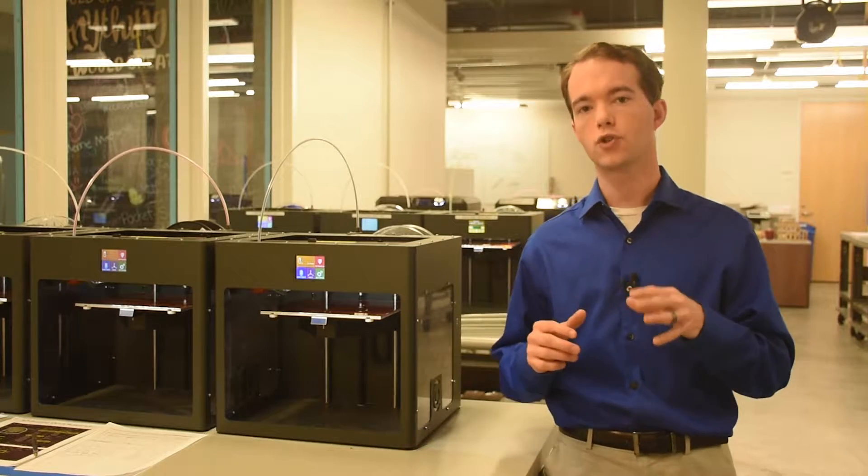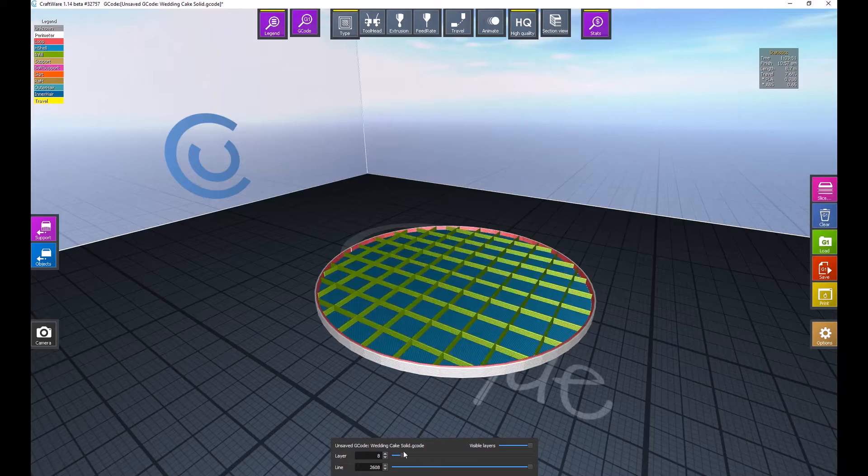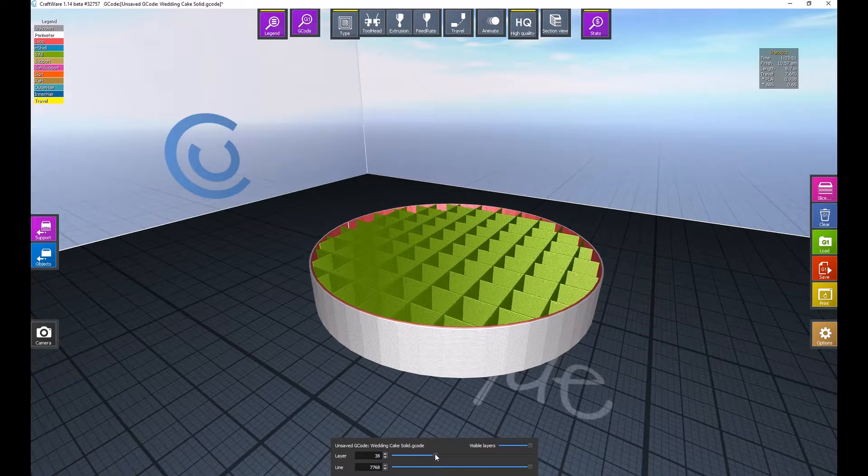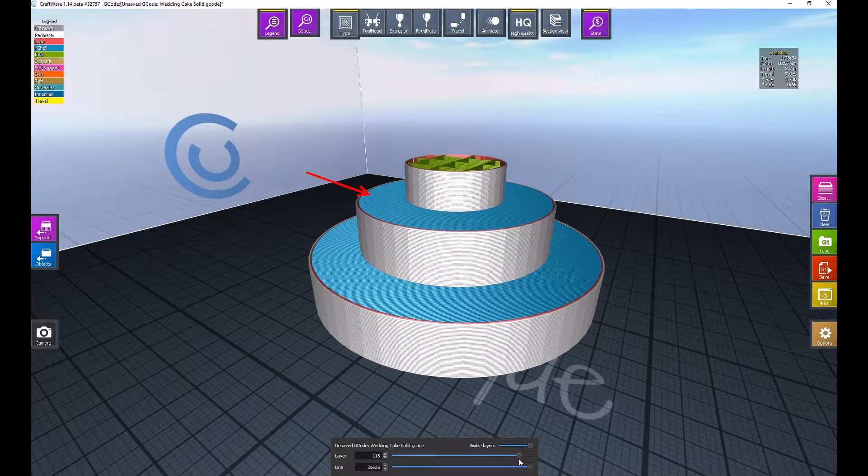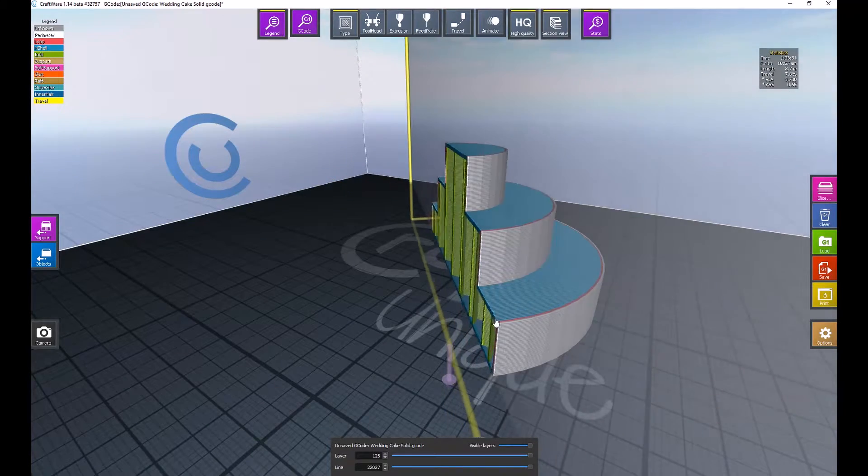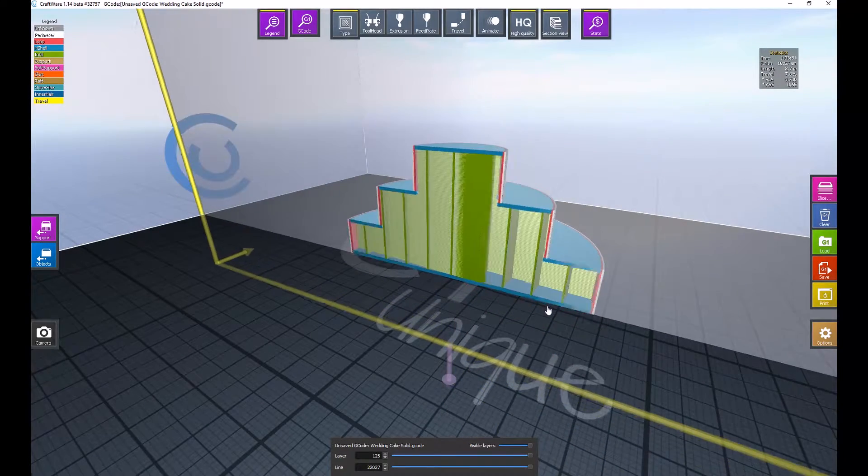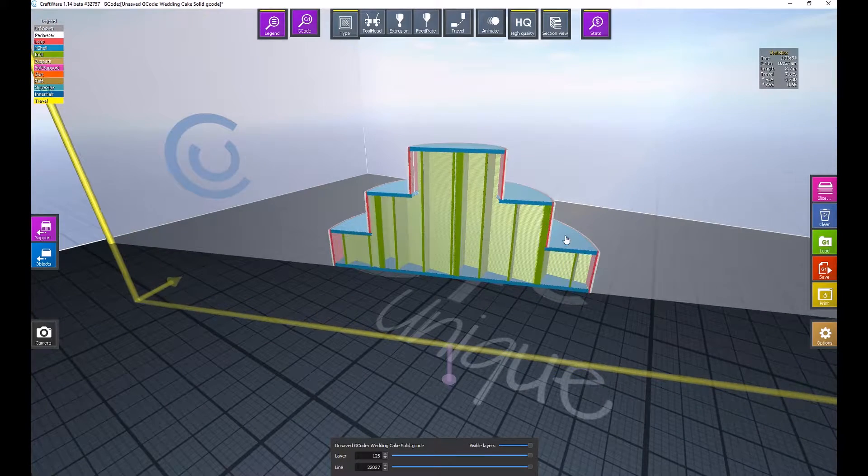Since I mentioned it, let's use the wedding cake example. If you have a solid wedding cake, you simply print it in its normal orientation and you have no problem, because the horizontal faces aren't overhangs. The model will be full of infill, which is okay, because it's less dense than support.